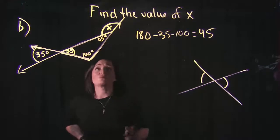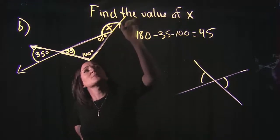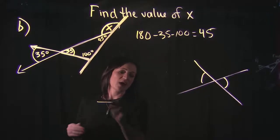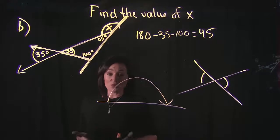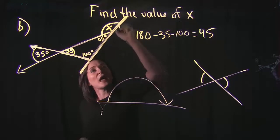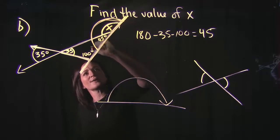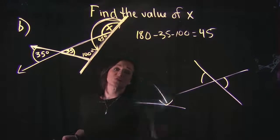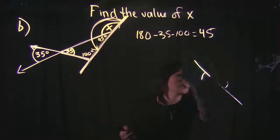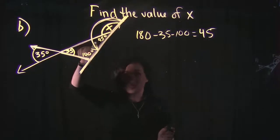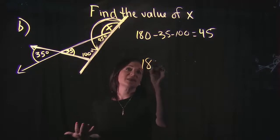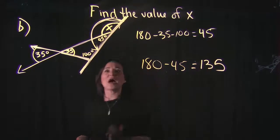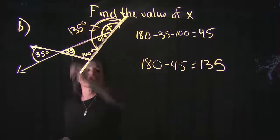Now to find X, I look at the straight line. A straight line equals 180 degrees, so X and 45 are supplementary angles — they add up to 180 degrees. Since we know one angle is 45, we subtract: 180 minus 45 equals 135. Therefore, X equals 135 degrees.